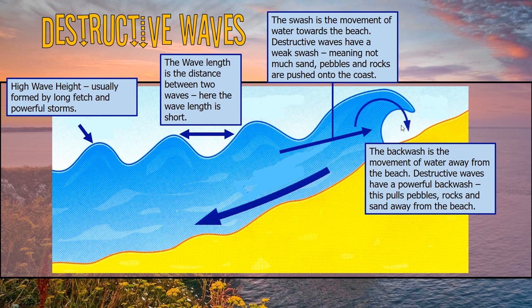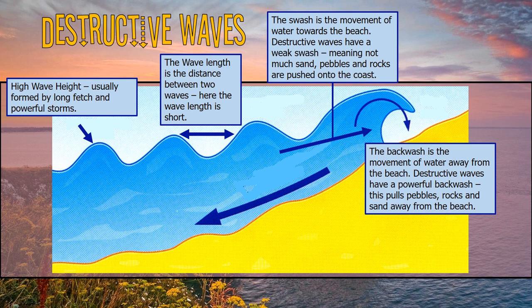Because destructive waves have a strong backwash, they pull material from the beach into the sea, but they haven't got a very strong swash, so that material cannot be pushed back onto the land — therefore the beach is being destroyed. They usually have a high wave height, formed by long fetch and powerful storms. The wavelength — the distance between two waves — is short, so you get a lot of waves quite quickly, quite high, quite destructive.